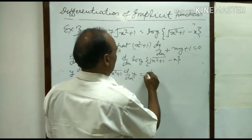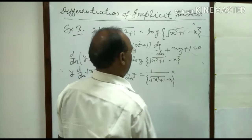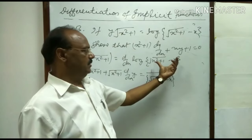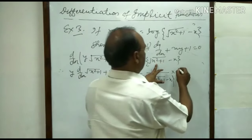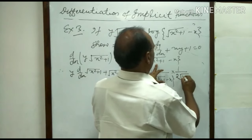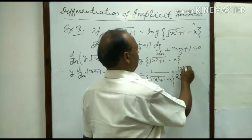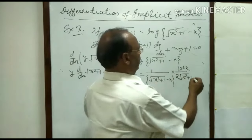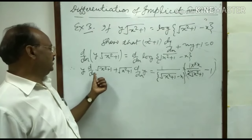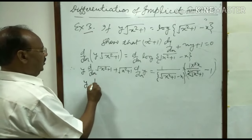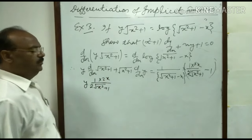On the right hand side this is a logarithmic function, so we differentiate by chain rule. This equals 1 over root(x square plus 1) minus x, into the derivative of the inside. Derivative of root(x square plus 1) with respect to x by chain rule is 1 over 2 root(x square plus 1) times 2x, and derivative of x is minus 1.